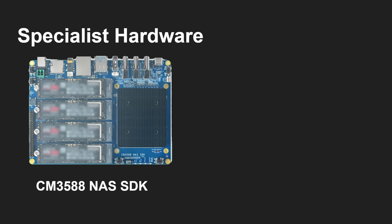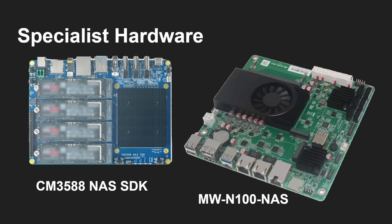You can also get specialist NAS RAID hardware. Here for example is a board from FriendlyElec built on the CM3588 NAS SDK — you can put in four NVMe M.2 drives and that's all you need. Or something like this NAS unit using an Intel N100 CPU, with six SATA connections plus M.2 slots. So you could buy dedicated hardware, or just pick up a secondhand PC or Raspberry Pi.